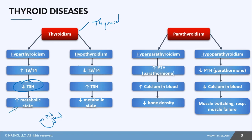With hypothyroidism, there are low levels of T3 and T4. The body is trying to stimulate production back to the pituitary gland but that's just not happening, so it results in a high level of TSH in spite of low levels of T3 and T4. This leads to a decreased metabolic state.